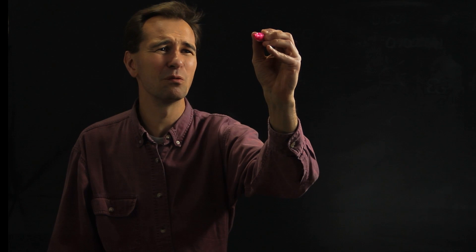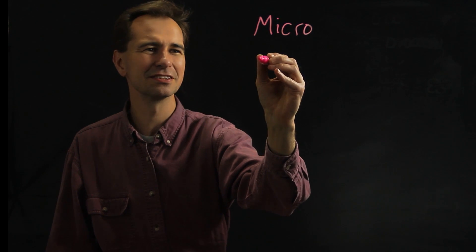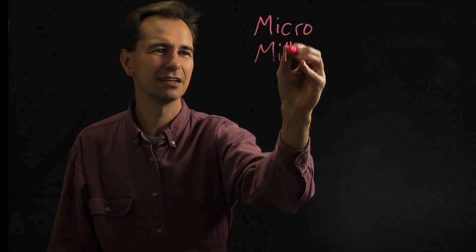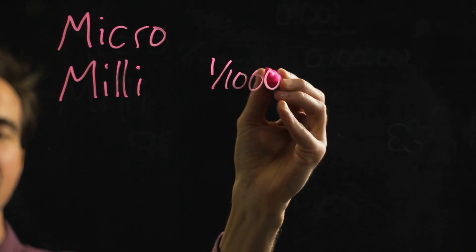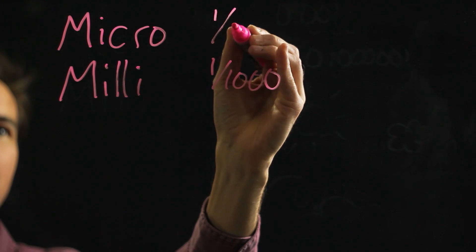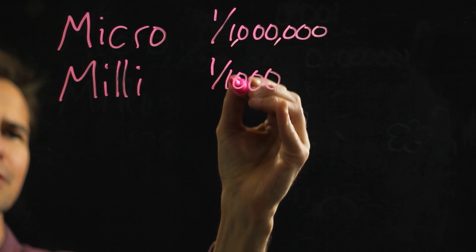In the metric system there are a whole bunch of different prefixes. Milli means one thousandth of something and micro means one millionth of something. So yeah, lots of zeros there.